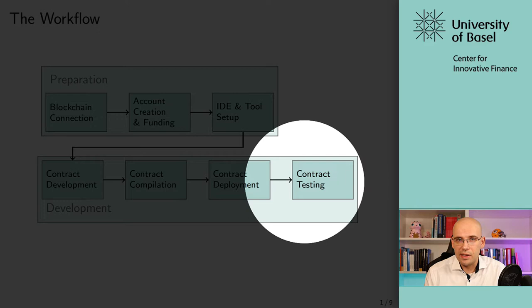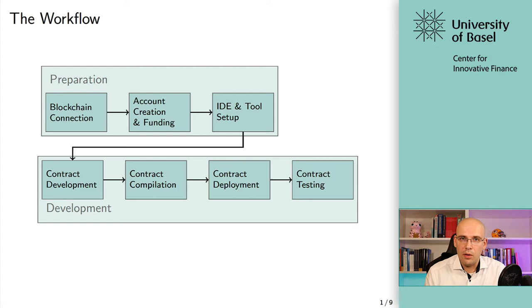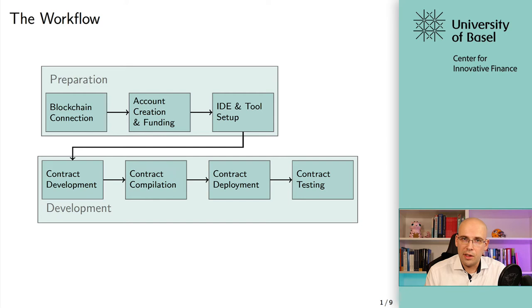Last but not least, and this is extremely important, is of course testing. This doesn't mean that you shouldn't test before you've actually deployed your contract — you're always testing. But contract deployment doesn't just refer to mainnet or contracts in production. In many cases, as you will see, you're deploying your smart contracts to testnets, to your own private network, in order to test it, write various test cases, and evaluate the security and functionality of your smart contract.